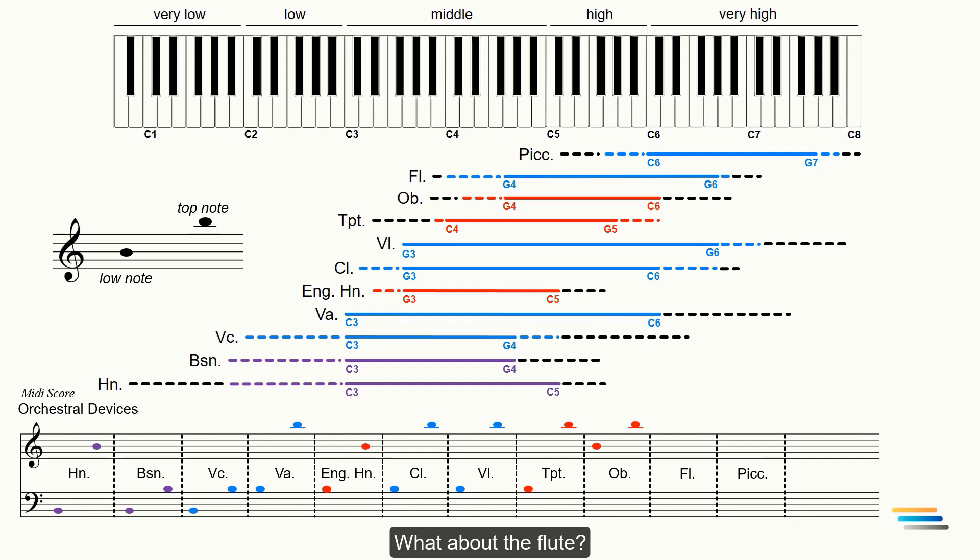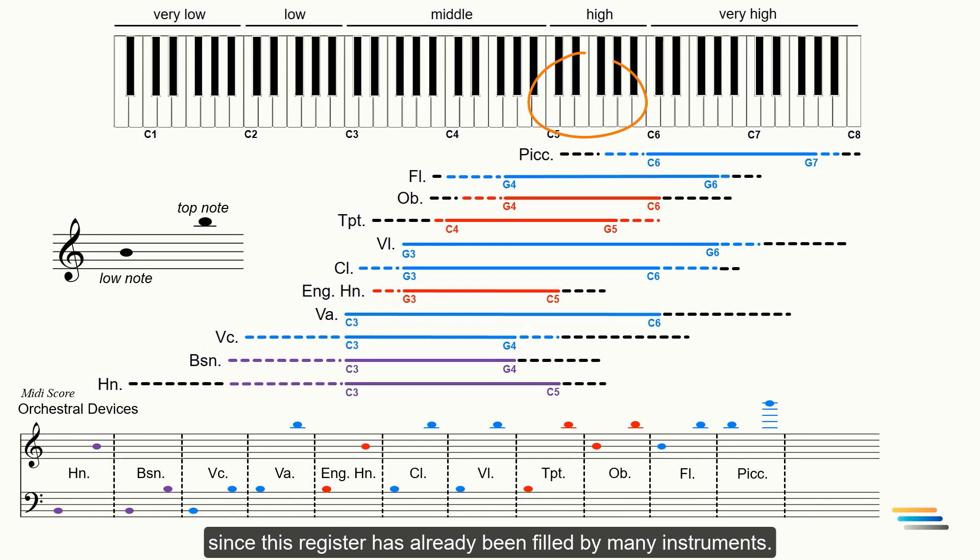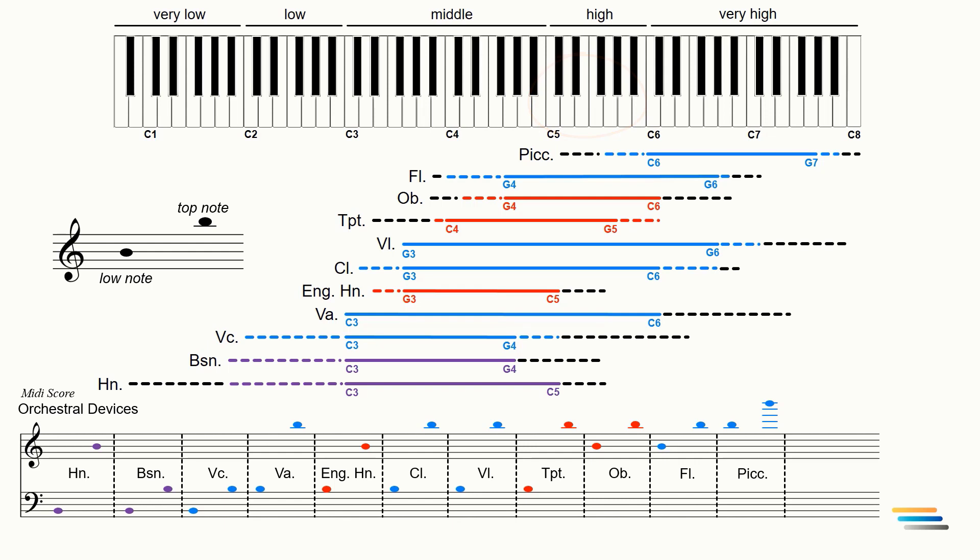What about the flute? The lower register will be useful in other charts. Since B6 is quite high, I will use just B4 and B5. The piccolo works well between B5 and B6. Of course, it can be used one octave lower. However, I didn't use it since this register has already been filled by many instruments. So, we have marked all possible and effective registers.